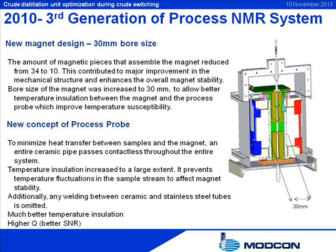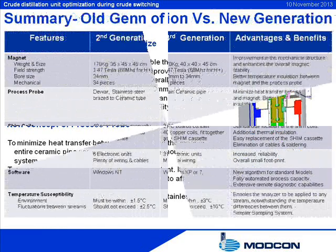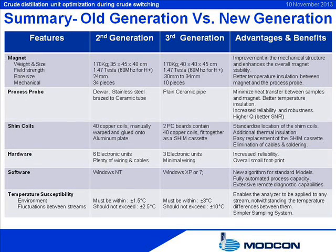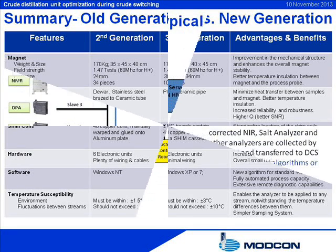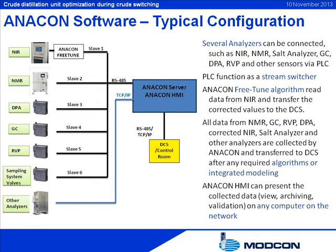The overall new design ensures successful application of this unique technology in refineries and chemical process industries. The evolution of process NMR technology enables the analyzer to be applied to any stream notwithstanding the temperature differences between them. When crude switching occurred, MOD 8000 minimized the impact on CDU operation by an immediate adjustment to shift the exact cut point so that the maximum production capacity for each product towards the most valuable distillates was achieved. The combination of discrete NIR and NMR analyzers enables users to reach performance, accuracy, and availability that is difficult to reach using only one technology.